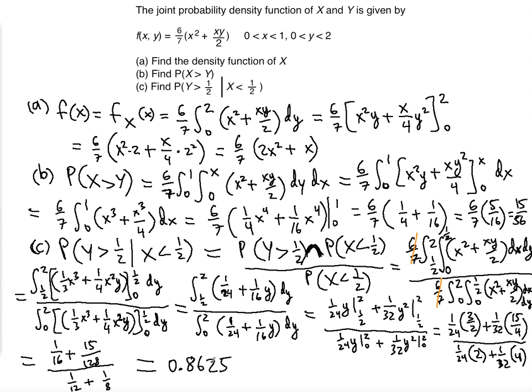So the probability that y is greater than 1/2, given that x is less than 1/2, is 0.8625. Thank you for watching — hope this was helpful. See you in the next video.